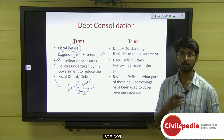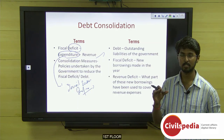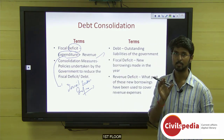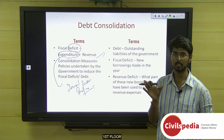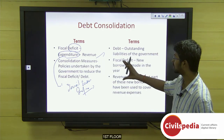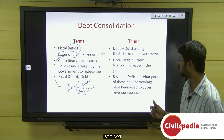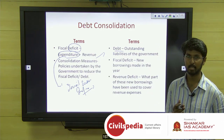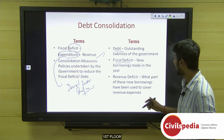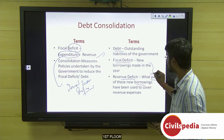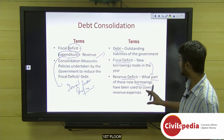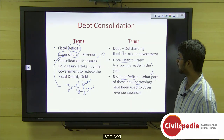The government then comes up with fiscal consolidation measures — policy measures to contain fiscal deficit to a target. Under the FRBM Act of 2003, the fiscal deficit target is 3%. Debt is the outstanding liabilities of the government; fiscal deficit is the new borrowings made each year. Revenue deficit is that part of borrowings used to cover revenue-related expenses.